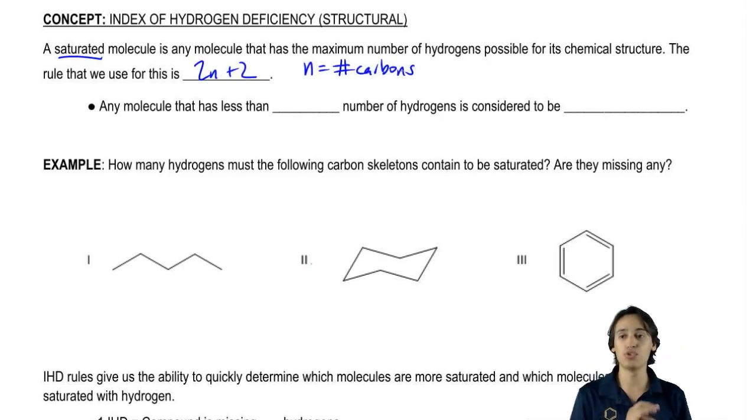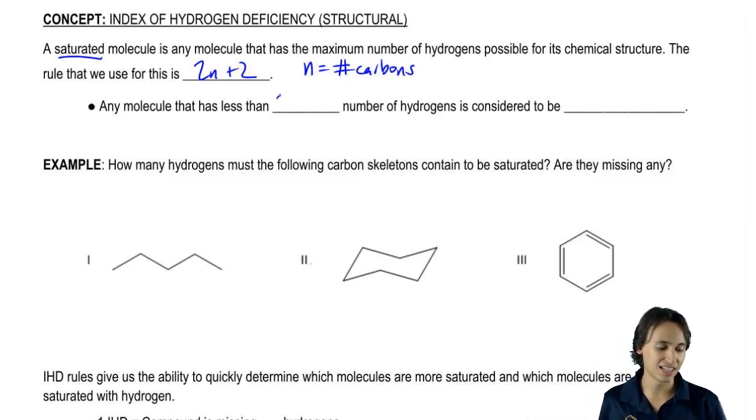So I have my 2n plus 2 rule and what that's going to do is it's going to predict for me how many hydrogens I need for my structure for it to be fully saturated, meaning it has as many hydrogens as it can possibly hold. Any molecule that has less than that number, 2n plus 2, is going to be considered to be unsaturated.